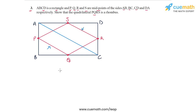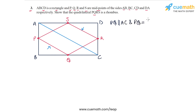First let's see how PQ is related to AC. If you take triangle ABC and apply the midpoint theorem, P and Q are the midpoints of AB and BC. So using the midpoint theorem we can claim that PQ is parallel to AC and PQ is equal to half of AC.